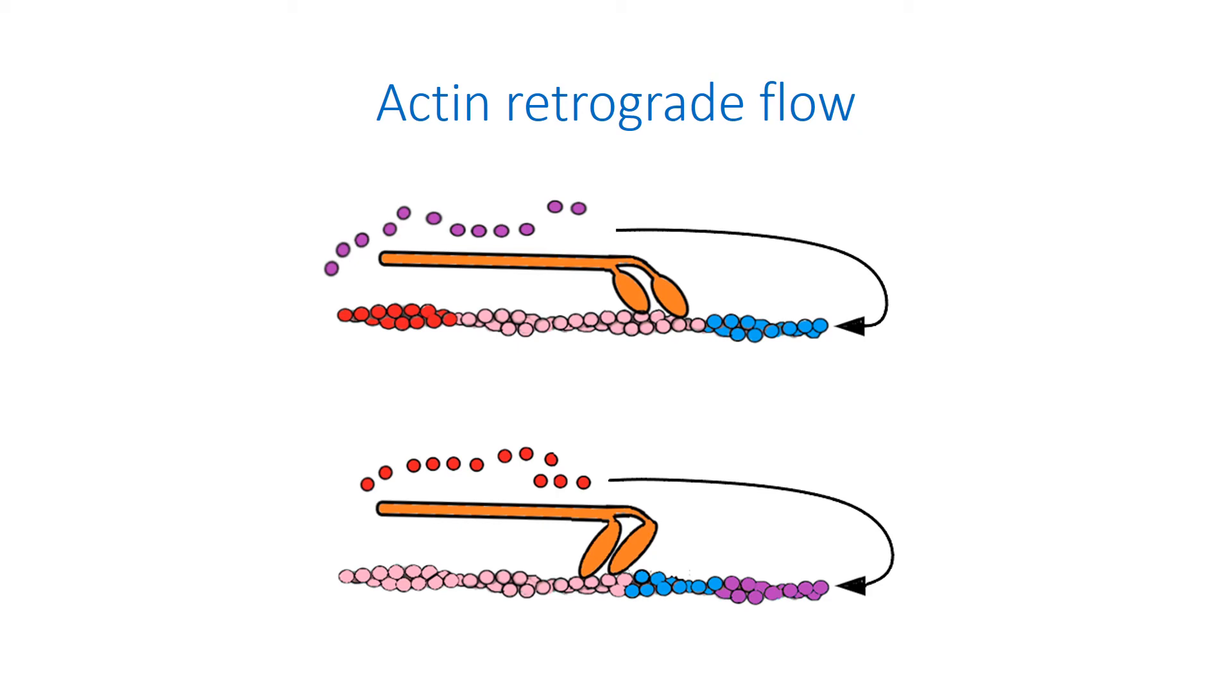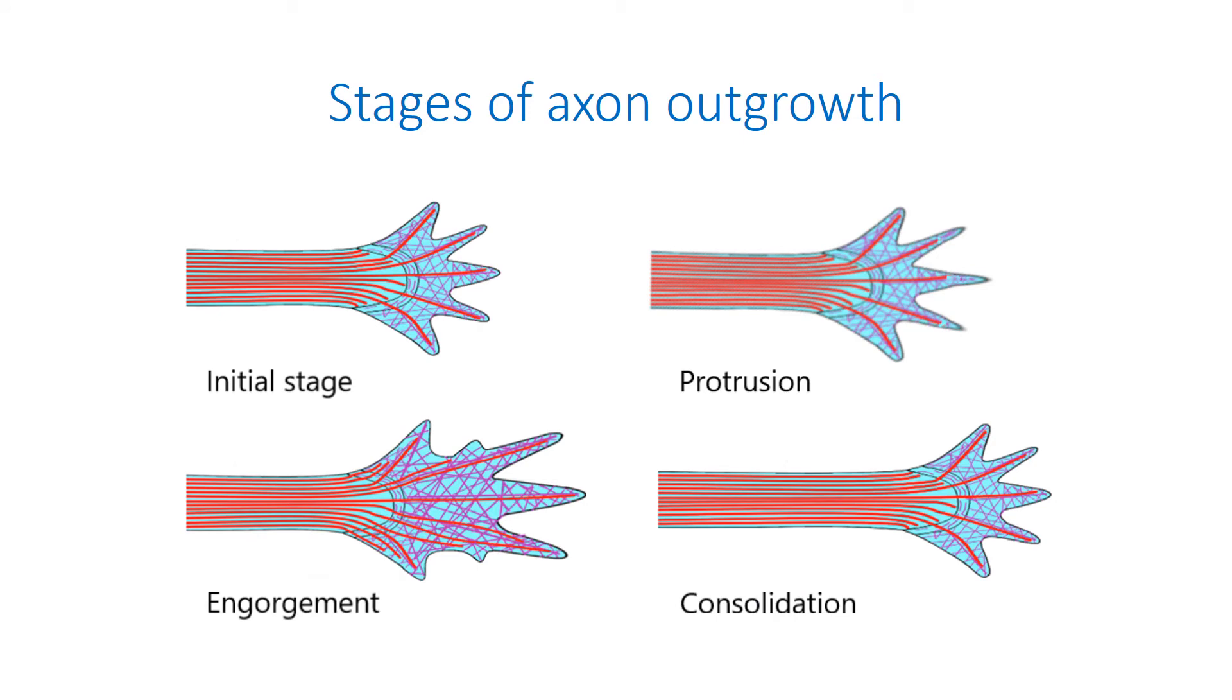The growth cones are characterized by the highly dynamic nature that allows them to respond to the surrounding environment by rapidly changing direction in response to various stimuli. There are three stages of axon outgrowth – protrusion, engorgement, and consolidation. During protrusion, the F-actin filaments grow toward the leading edge, and this leads to the corresponding extension of the growth cone.